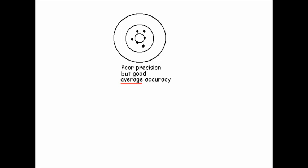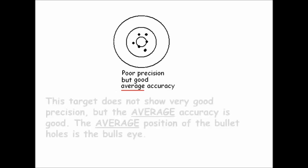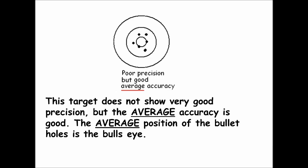However, what you'll probably encounter in this course is poor precision but good average accuracy — target D is the more common result. This target doesn't show very good precision, but the average accuracy is good: if you draw a line through the bullet holes, they all cross right through the bullseye. That's why you take many measurements and average them together — to achieve good average accuracy.